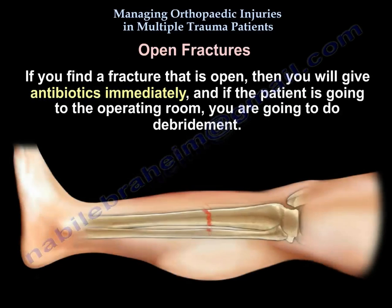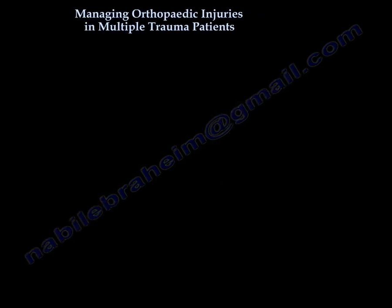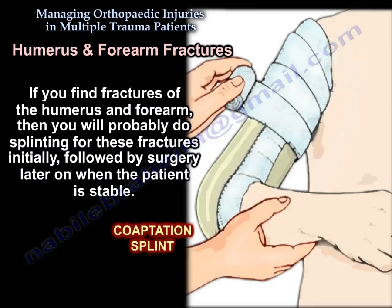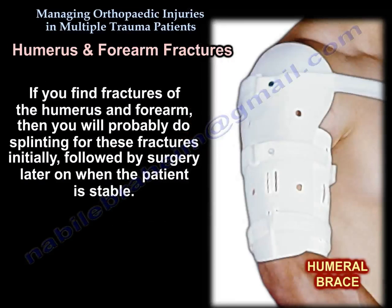If you find a fracture that's open, you will give antibiotics immediately, and if the patient is going to the operating room, you will do debridement. If you find fractures of the humerus and the forearm, you will do splinting for these fractures initially, followed by surgery later on when the patient is stable.